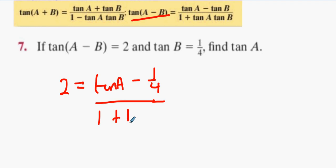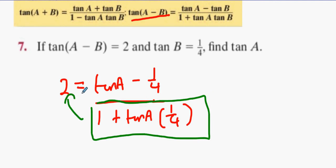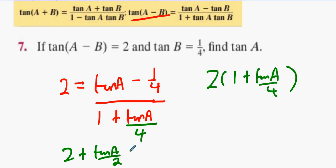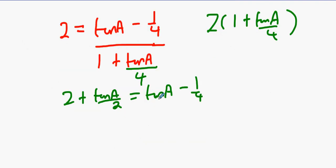1 plus tan A times a quarter. Everything in the green box multiplies by 2. That quarter tan A is the same as tan A over 4. So 2 multiply by 1 plus tan A over 4 - what do we get? 2 plus half tan A. And what's 2 plus a quarter?